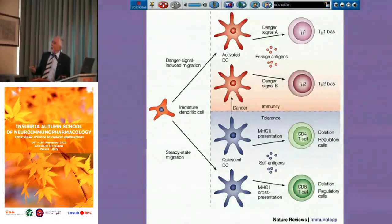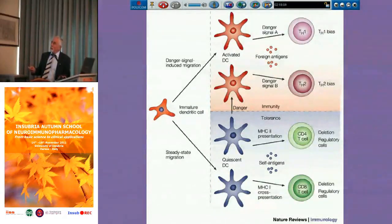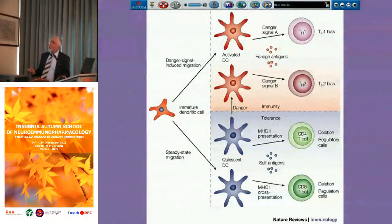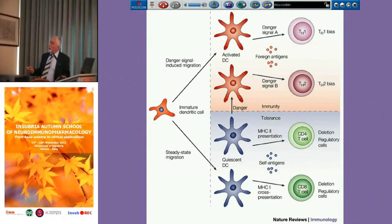However, in the absence of a dangerous signal, mature dendritic cells do migrate in a steady-state way to the draining lymph node, and they may carry and present self-antigens. The outcome would be deletion of possibly autoreactive T cells, or formation of regulatory cells, and thus induction of tolerance to self-antigens.